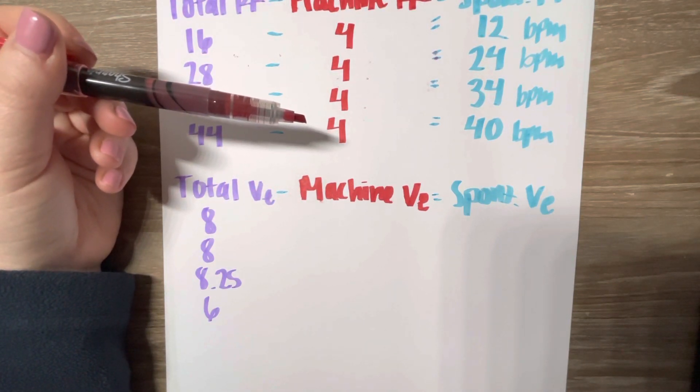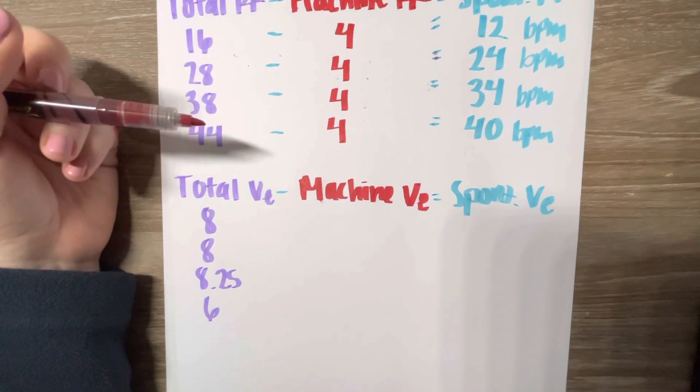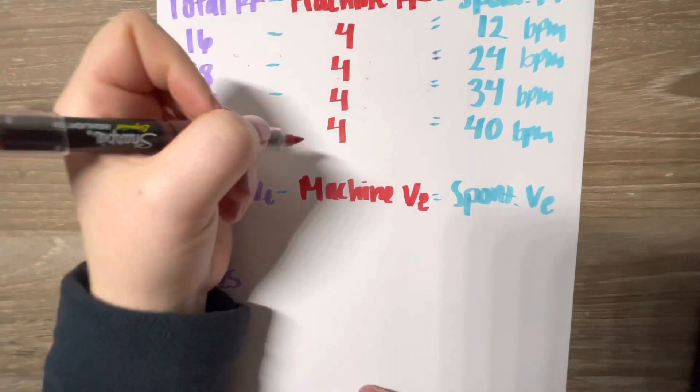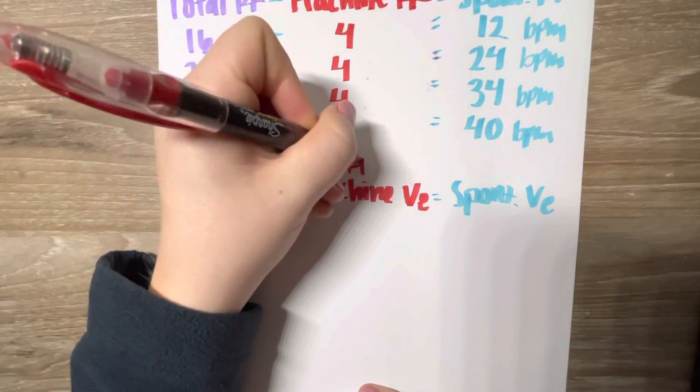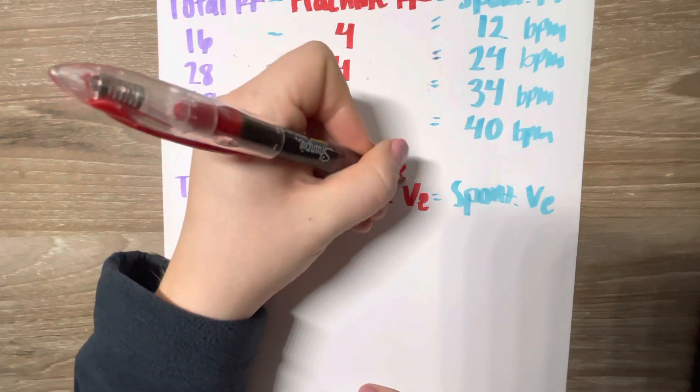So we are not directly given machine minute volume like we were the machine rate. However, we are indirectly given it because they give us the two values required to find this value. So if you recall, the tidal volume times respiratory rate is our minute volume.